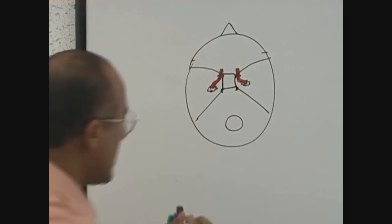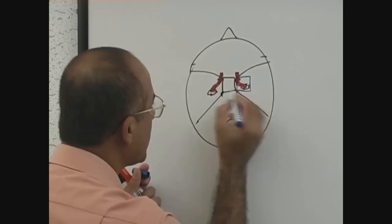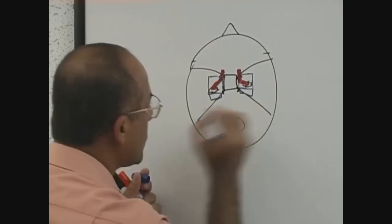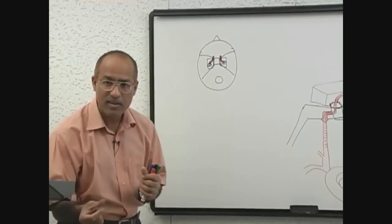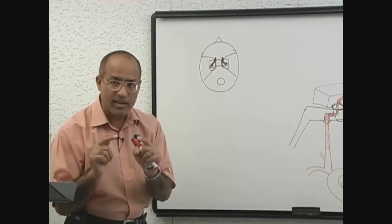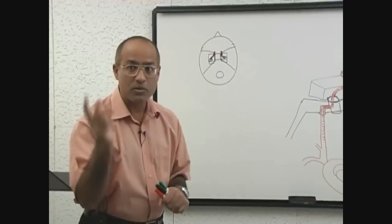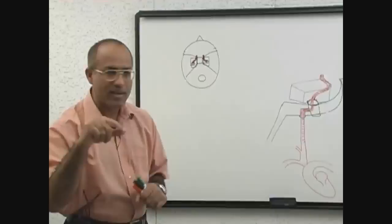The internal carotid artery is present within the cavernous sinus, which is present on both sides. You have to remember: the internal carotid artery enters the cavernous sinus through the foramen lacerum, passes through the cavernous sinus, and medial to the anterior clinoid process it turns upward sharply and pierces the dura mater and arachnoid mater to appear in the subarachnoid space.